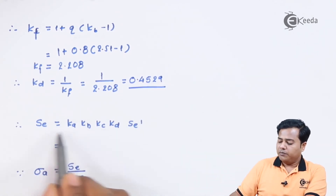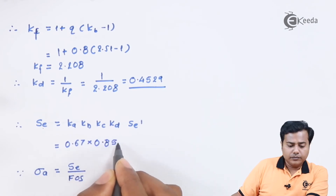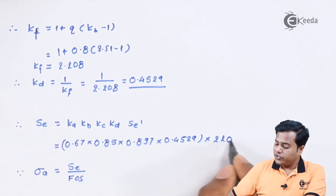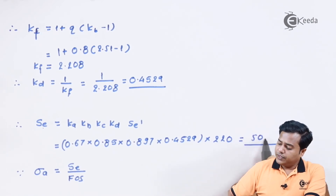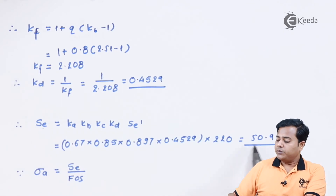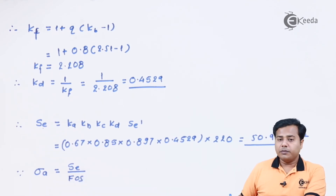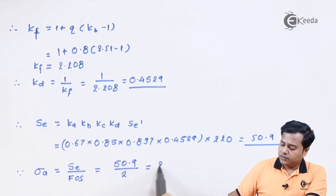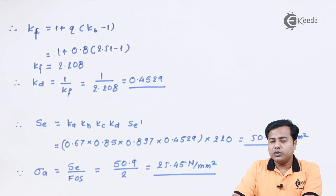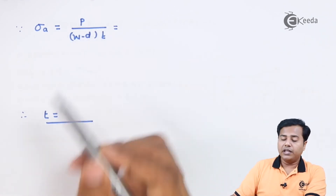Using all four correction factors we can compute the corrected endurance limit. After solving the expression, the corrected endurance limit comes out to be approximately 50.9 N/mm². The allowable amplitude stress is then given by the corrected endurance limit divided by the factor of safety, yielding the amplitude stress value needed to define this design.